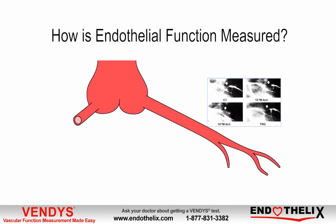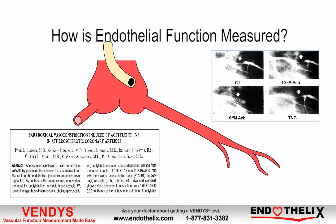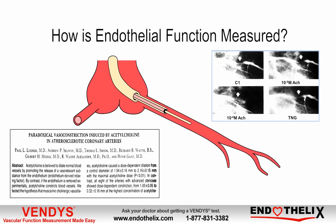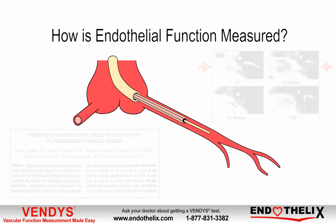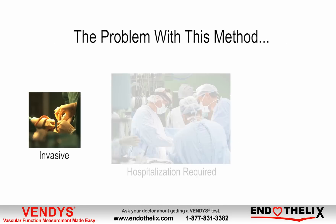How is endothelial function measured? In clinical cardiology research laboratories, endothelial function was first measured by injecting acetylcholine via catheter into the coronary artery and monitoring the response by X-ray imaging — specifically measuring the diameter change of the artery. If the coronary artery diameter increases, it indicates healthy endothelial function. However, if the diameter decreases, it is a clear indication of endothelial dysfunction and a sign of atherosclerosis.